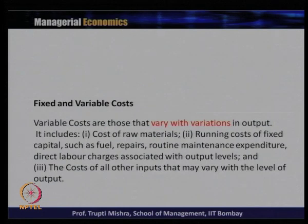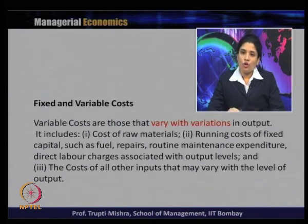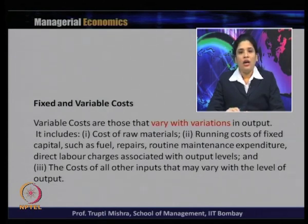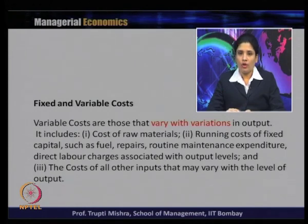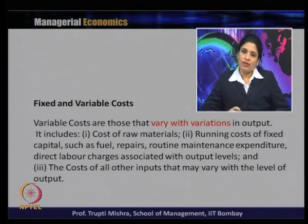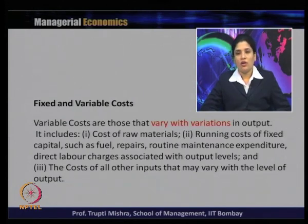Variable costs are those that vary with the variation in output. Whenever there is a variation in output that leads to variation in input, and variation in input leads to variable cost. It includes cost of raw materials, running cost of fixed capital such as fuel, repairs, routine maintenance expenditure, direct labour charges associated with the level of output, and the cost of all other inputs that may vary with the level of output. In the long run, all costs are variable because all inputs are variable.